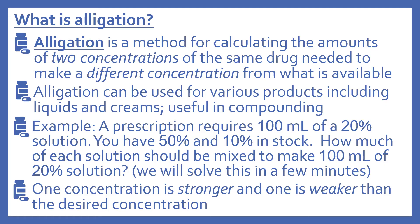I'm going to give you an example. A prescription requires 100 milliliters of a 20% solution. You have 50% and 10% of that solution in stock. How much of each solution should be mixed to make 100 milliliters of 20% solution? You have two concentrations of the same drug and you're going to make a different concentration using those two that you have. One concentration is stronger and one is weaker than the desired concentration in all allegation problems.